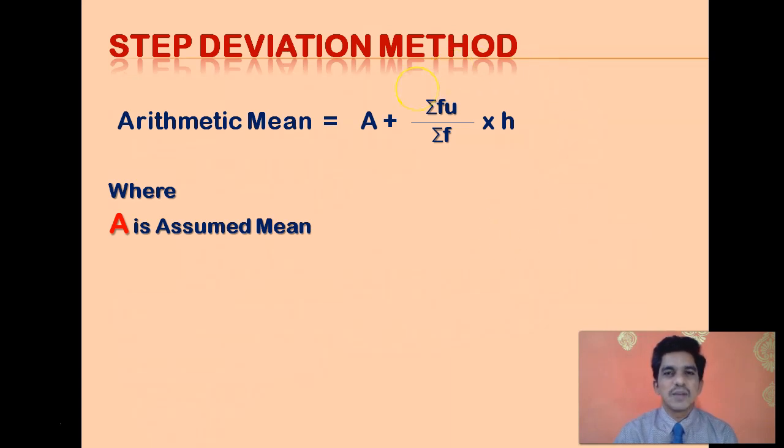So basically the class which has the highest frequency, that class's class mark we take as the assumed mean. So whenever you have to calculate the arithmetic mean of a classified data, class marks are very very essential.